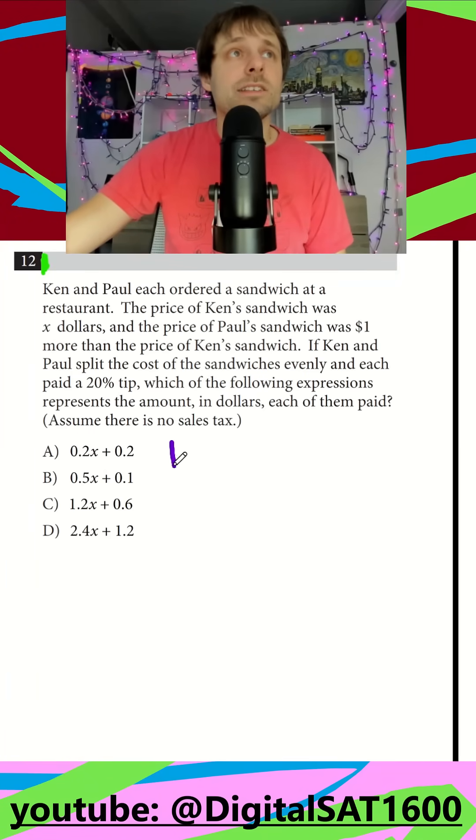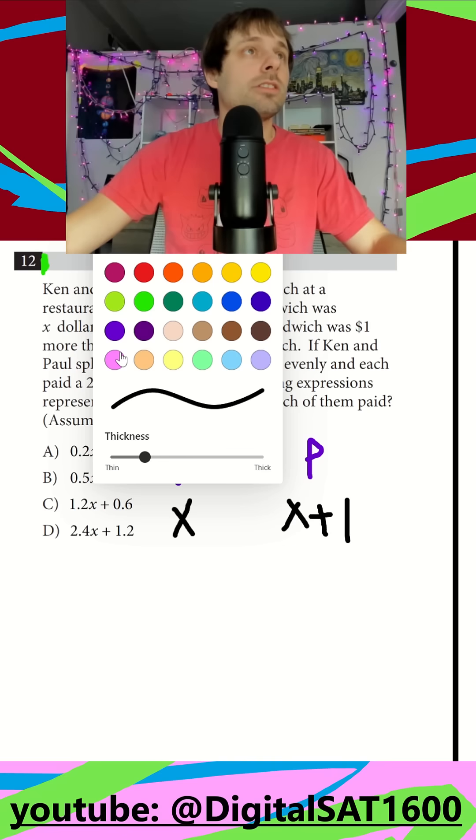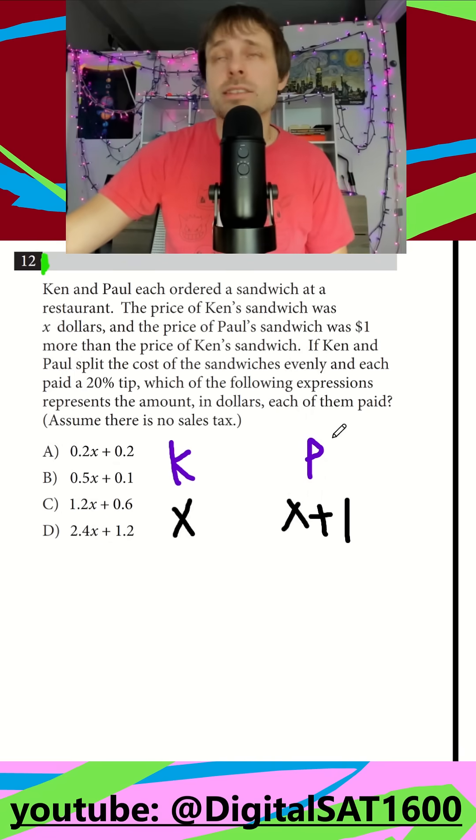Word problems in 60 seconds. I see two subjects, Ken and Paul. Ken paid x for a sandwich and Paul paid x plus one because he paid a dollar extra. It looks like these guys are going to split the cost, so I'm thinking what if I did 2x plus one and then divided by two.